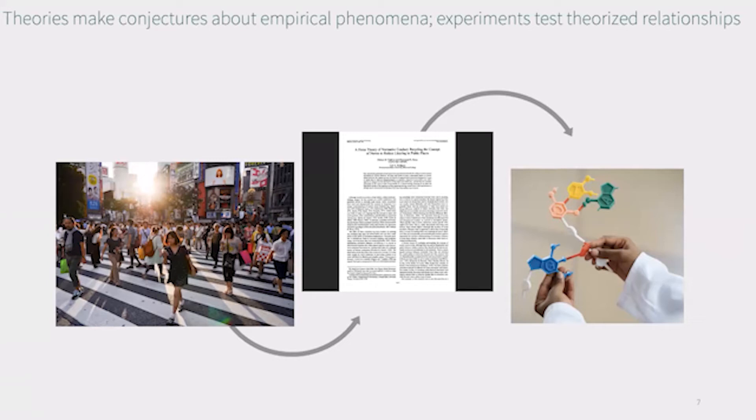You decide to run an experiment in which you ask participants to get from A to B. On their way, they have to cross the street and you instruct actors to cross when the light is red to see if the participants will follow them. In your control group, no actors are present.